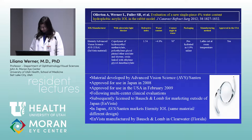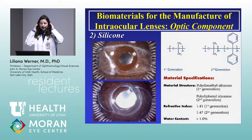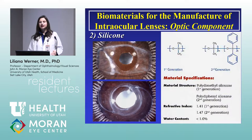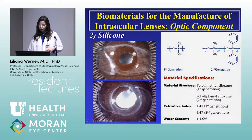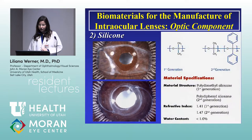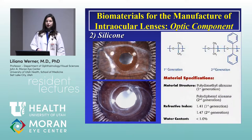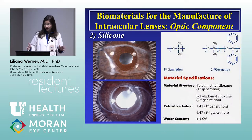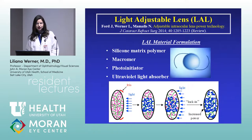The second class of foldable intraocular lenses is silicone. Not all silicone lenses are the same — there are different generations. Earlier generation silicone had a very low refractive index, making lenses much thicker. Modern silicone lenses have a much higher refractive index and are much thinner. Within each class, each lens is made of different copolymers, so you don't have just one material per class.